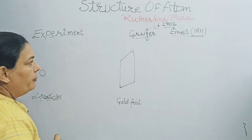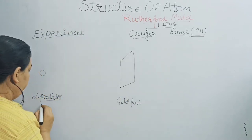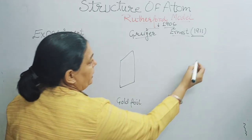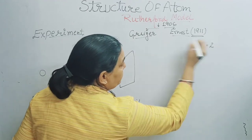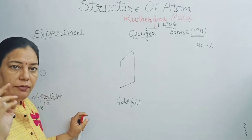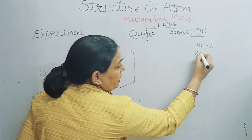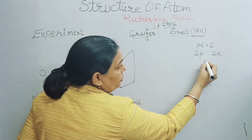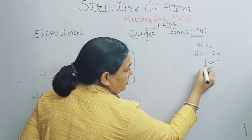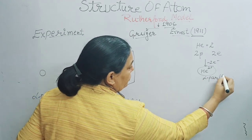Alpha particles are positively charged helium ions. Helium has atomic number 2. If two electrons are removed from a helium atom, it converts into He²⁺ ion, and these are called alpha particles. Alpha particles are positively charged helium ions — He²⁺.